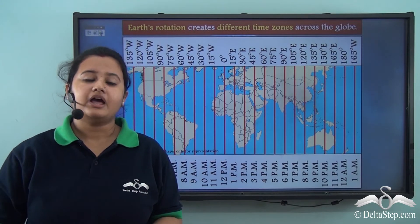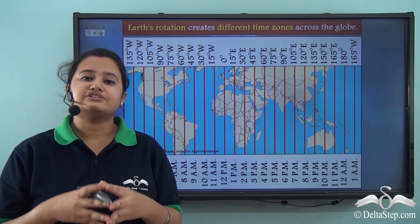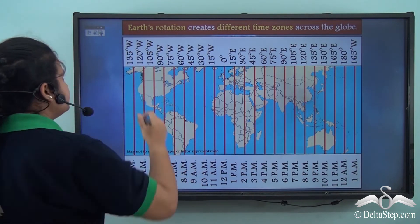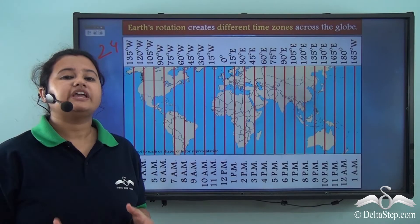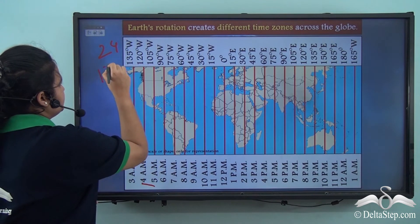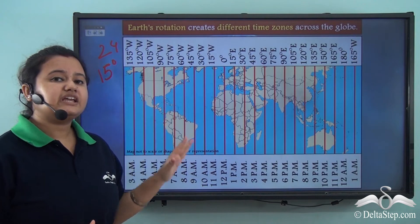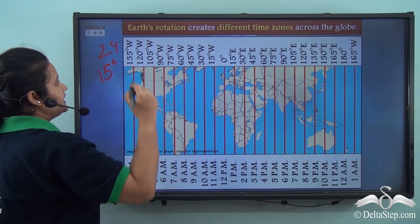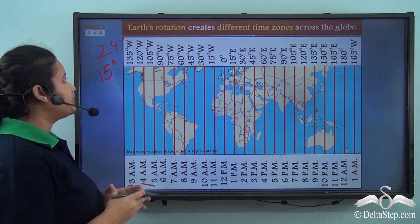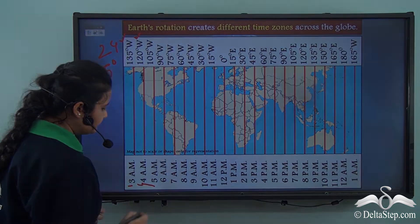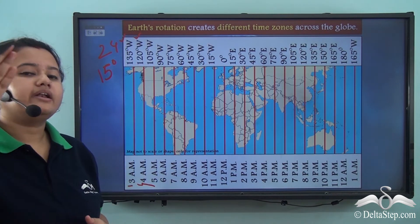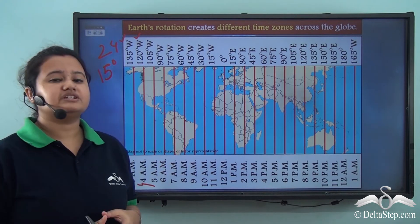Not only India or England, but different countries all across the globe have different timings because they follow different time zones. In particular, there are 24 time zones across the globe. Each time zone differs by 1 hour, or there is a difference of 15 degrees of longitude between each time zone. For example, the time according to 135° west longitude is 3 am, while the time according to 120° west longitude is 4 am — so the longitude lying to the east has a time 1 hour ahead.